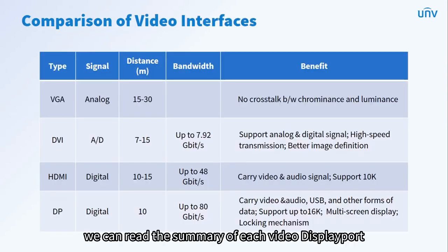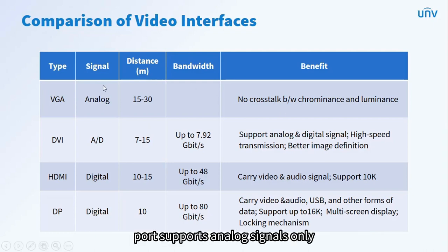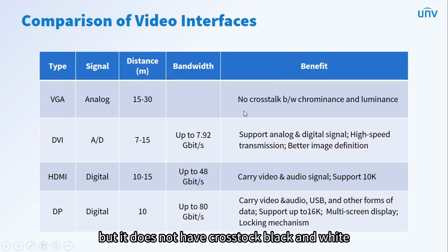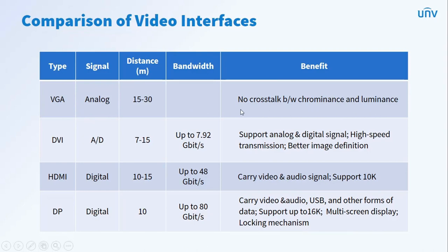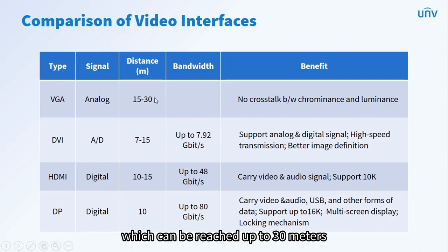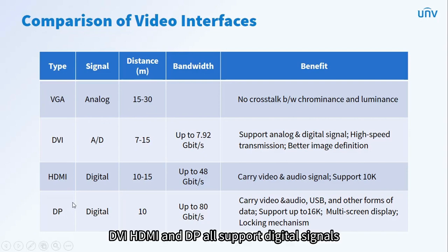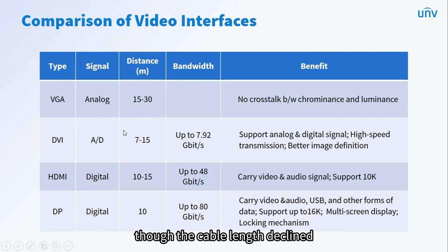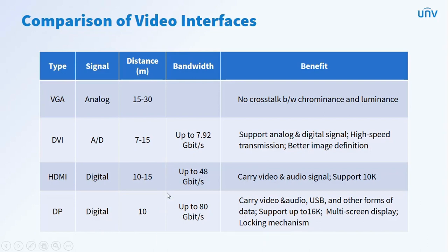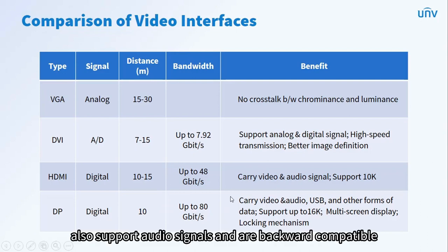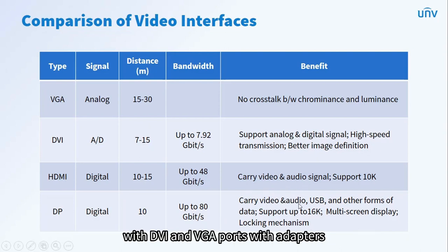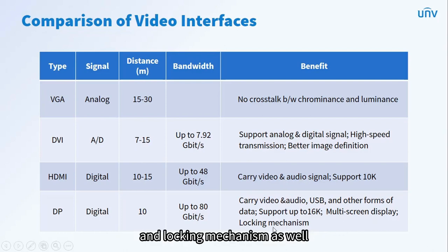In this comparison table, we can read the summary of each video display port. The VGA port supports analog signals only but has the longest cable length, up to 30 meters. DVI, HDMI, and DisplayPort all support digital signals. Though cable length declines, supported data transmission rate and resolution increase. HDMI and DisplayPort also support audio signals and are backward compatible with DVI and VGA ports with adapters. DisplayPort also supports multi-screen display and a locking mechanism.